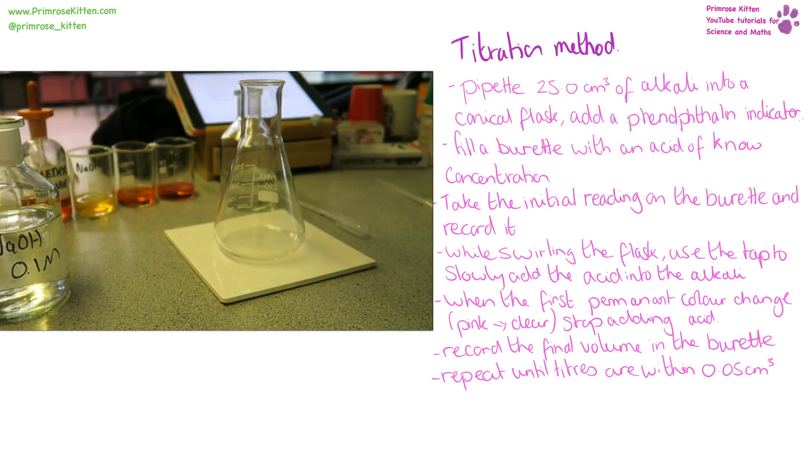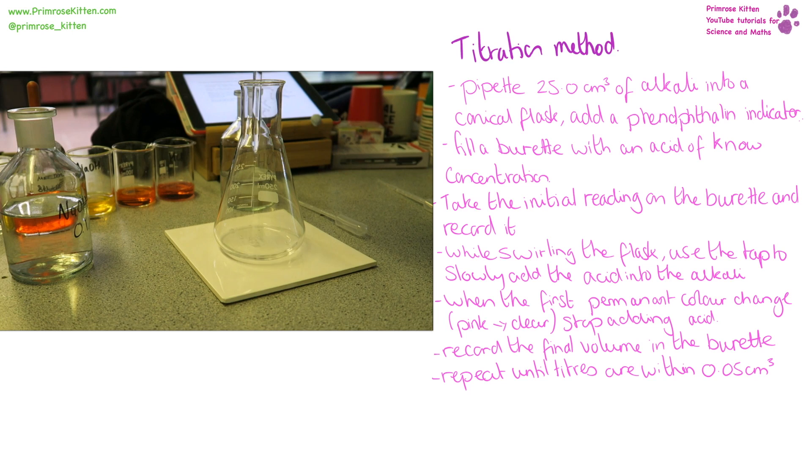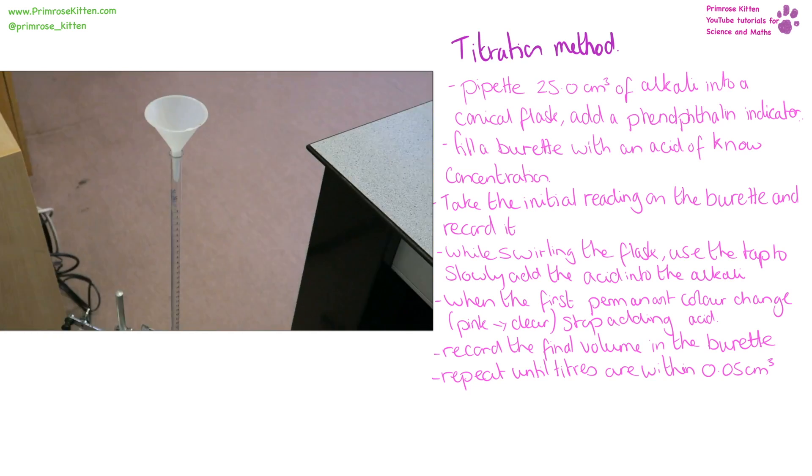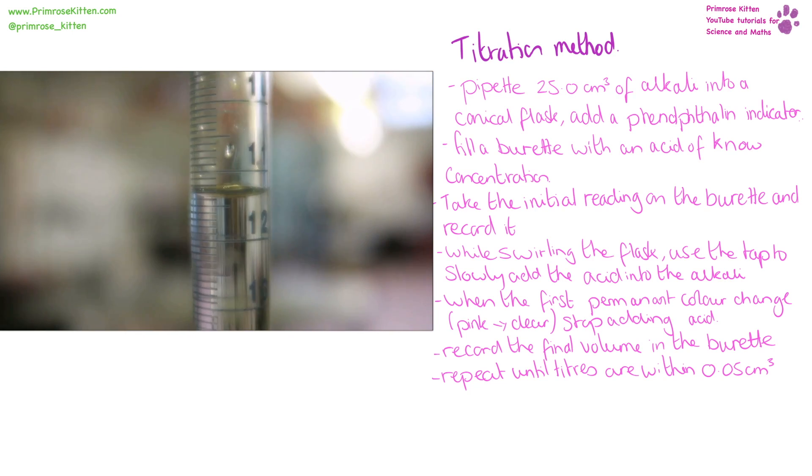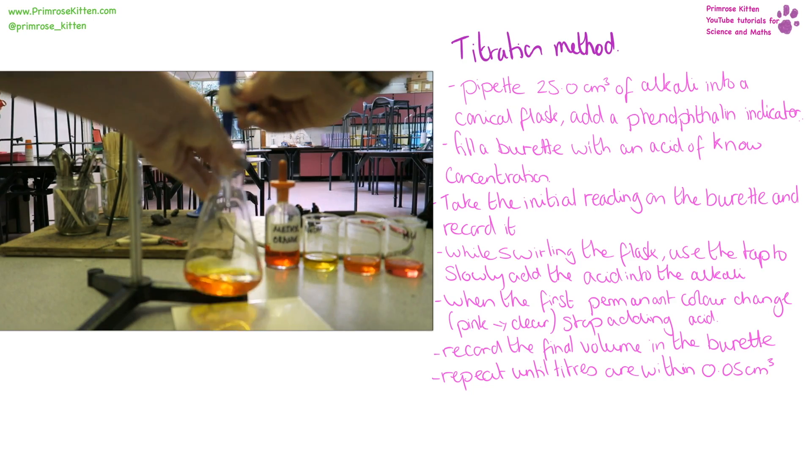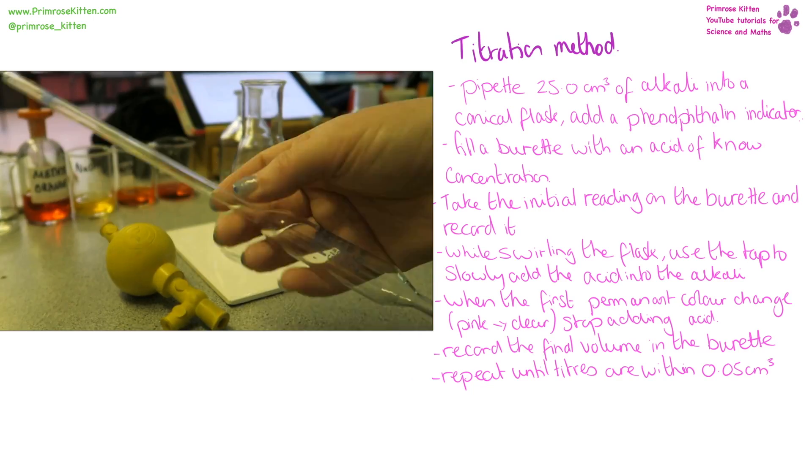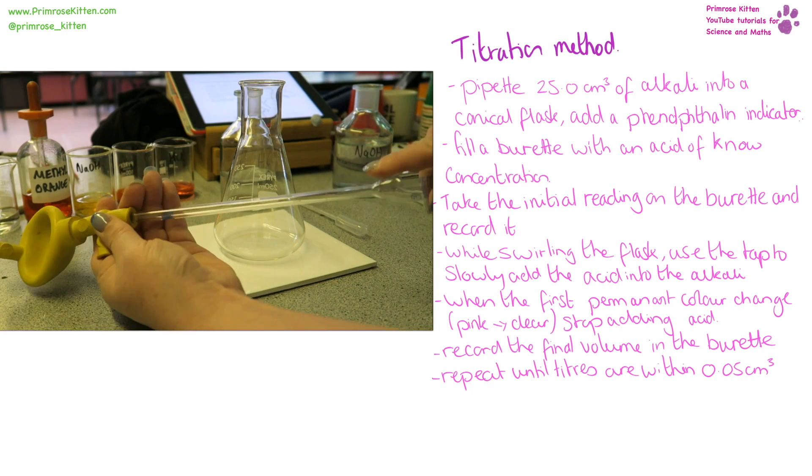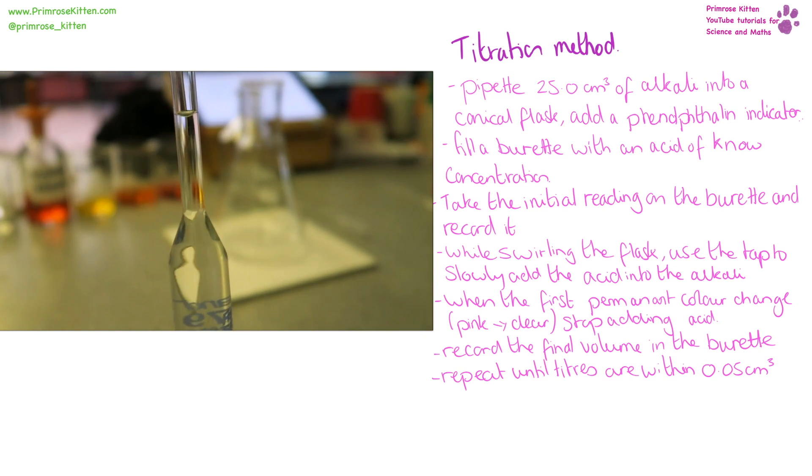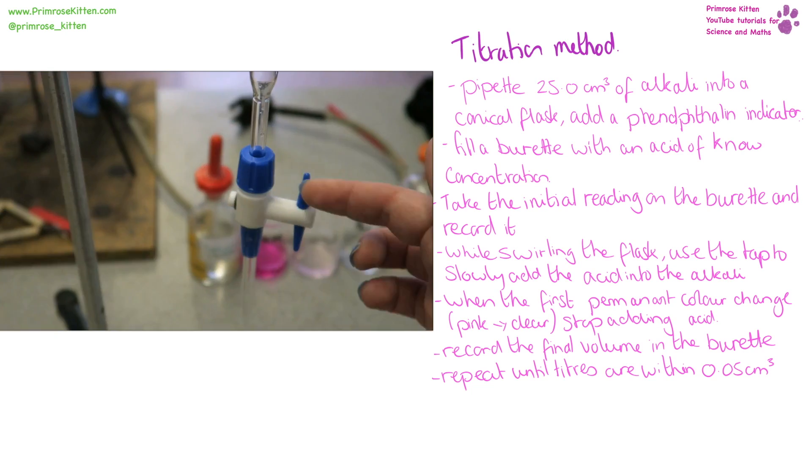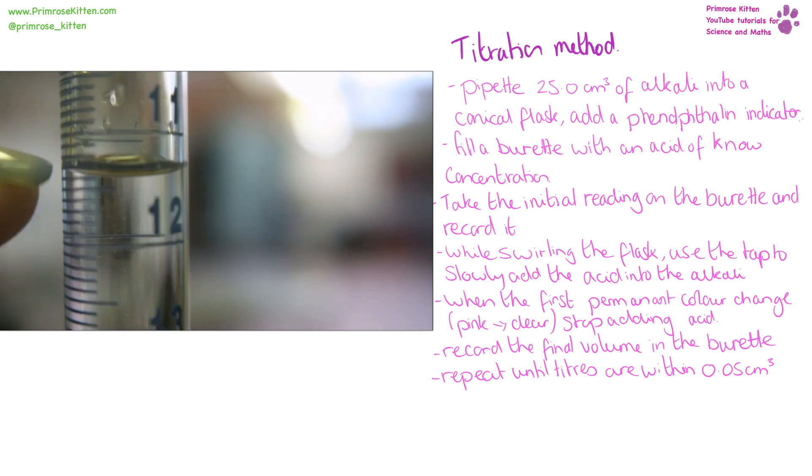To carry out a titration, first of all, you need to put 25 centimeters cubed of an alkali into a conical flask. Add a phenolphthalein indicator or an indicator like methyl orange. Fill a burette with an acid of a known concentration. Take the initial reading on the burette and record it. And while swirling the flask, use the tap to slowly add, drop by drop, the acid into the alkali.